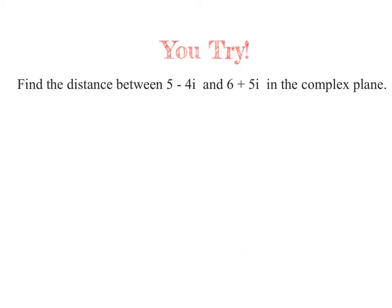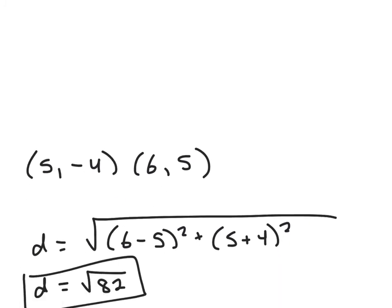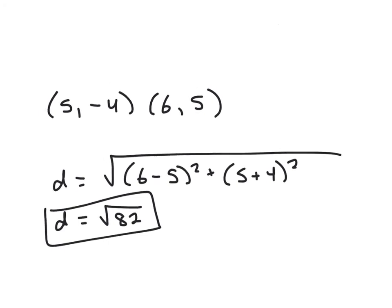Go ahead and pause the video and give this problem a try. Here are the two numbers written as coordinates, and then it's just the distance formula — you should get the square root of 82.